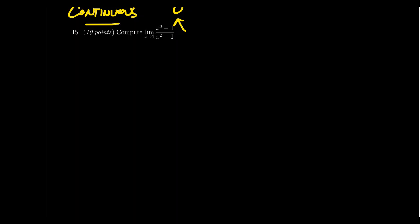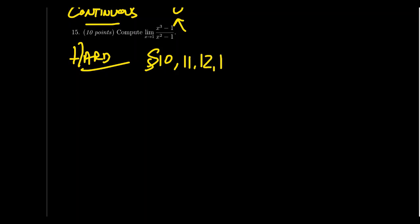Question number fifteen is the last and hardest limit calculation on the test. All the limit techniques from lectures 10 through 15 are fair game — it could be a limit as x approaches infinity. Most likely it's going to be the limit of a difference quotient. Even though plugging in x = 1 gives 0/0, you have to remove the discontinuity through algebraic manipulation. The function is undefined at x = 1, but the limit still exists. It could involve rational expressions, exponentials, or radicals like square roots. Apply everything you've learned to compute this limit and get full credit.